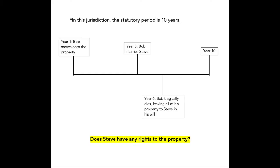But what happens if the adverse possessor stops possessing the property halfway through the statutory period? Consider this scenario: Bob moves onto the property in year one. He marries Steve in year five. Tragically, he dies in year six, leaving all of his property to Steve in the will. In that jurisdiction, the statutory period is 10 years. So the question is, does Steve have any rights to the property?